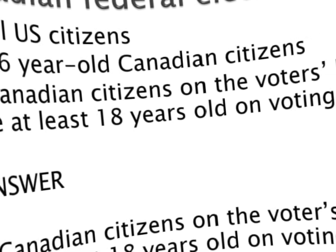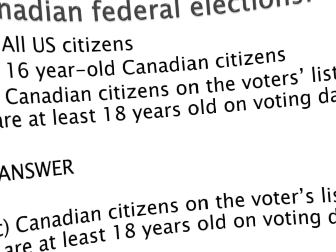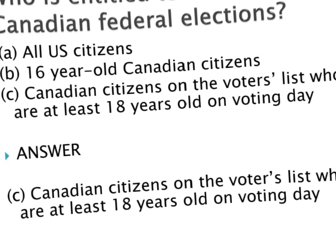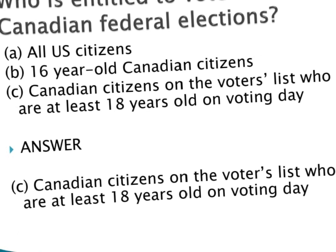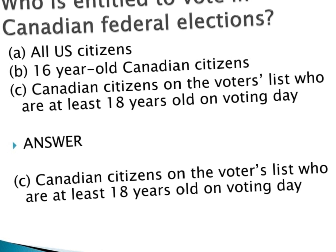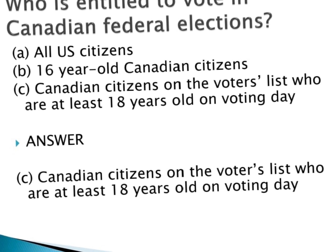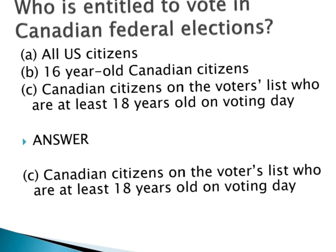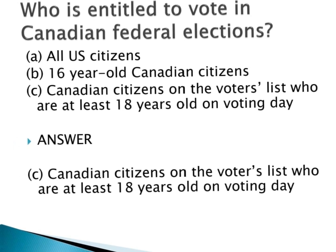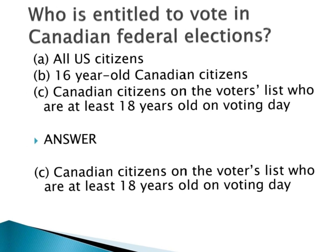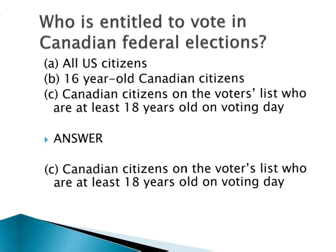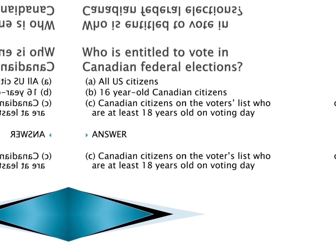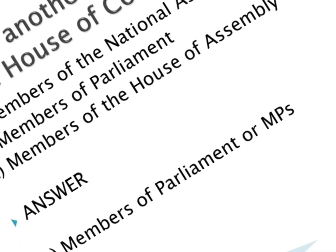Who is entitled to vote in Canadian federal elections? a. All U.S. citizens. b. 16-year-old Canadian citizens. c. Canadian citizens on the voters list who are at least 18 years old on voting day. Answer: c. Canadian citizens on the voters list who are at least 18 years old on voting day.